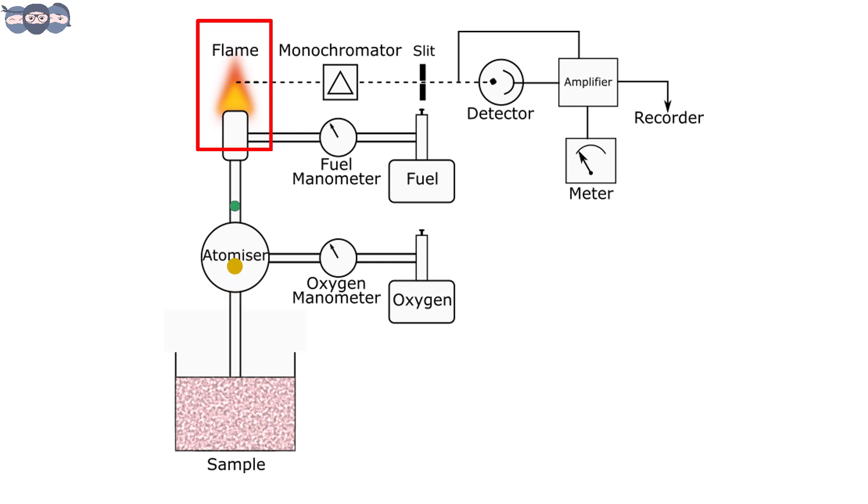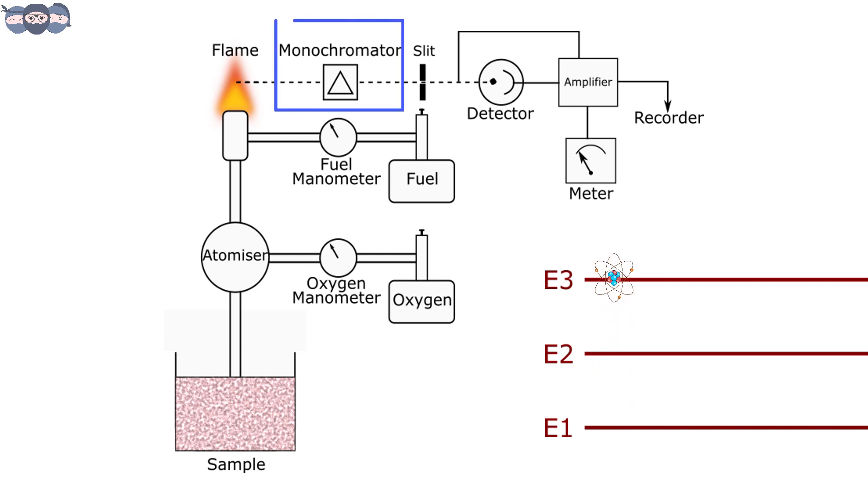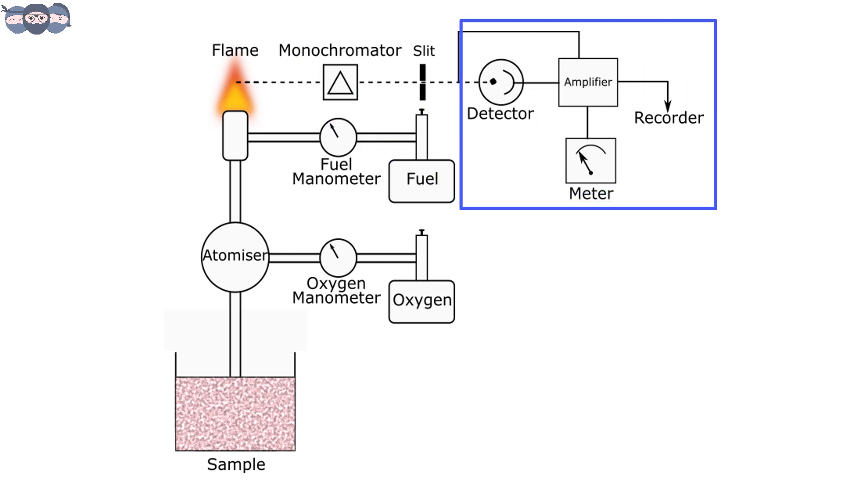The next component is the flame. The flame is employed to heat the aerosolized sample and provide energy to the atoms present in the sample. The atoms take up this energy and go to higher atomic state. The flame is followed by a monochromator which filters out the wavelengths, and the final part of the instrument is the detector and display.